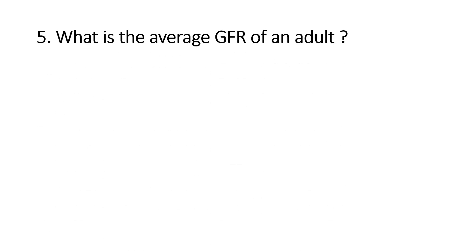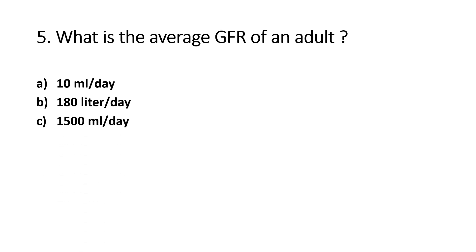What is the average GFR of an adult? Option A - 10 ml per day, Option B - 180 litres per day, Option C - 1500 ml per day, Option D - 1 ml per day. The right answer is Option B, 180 litres per day.